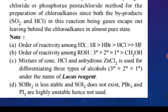The second note: the order of reactivity of alcohol is 3° > 2° > 1° > methyl alcohol. So 3-degree alcohol reacts the fastest. Also, SOBr2 is less stable and SOI2 does not exist, which is why we can only use SOCl2 in the last reaction. Similarly, PBr5 and PI5 are highly unstable and hence are not used.